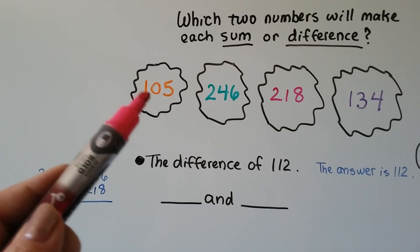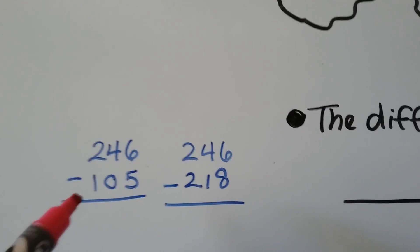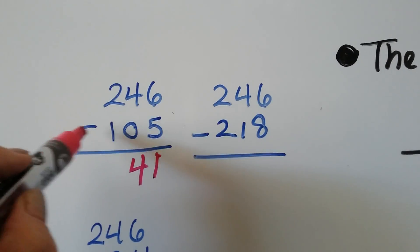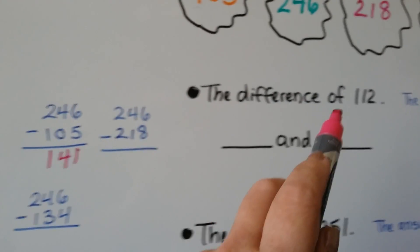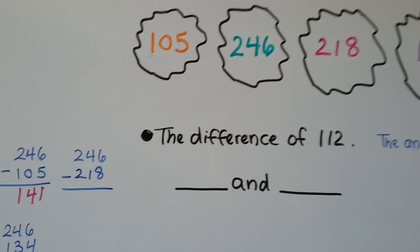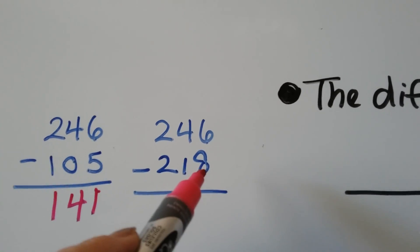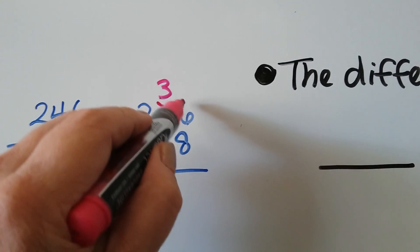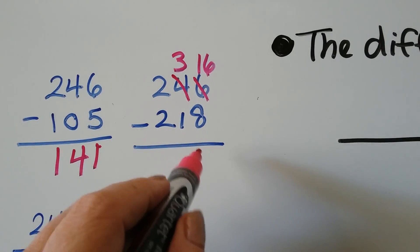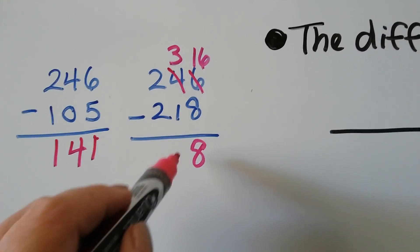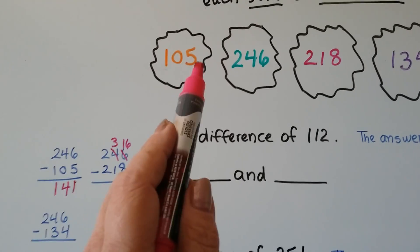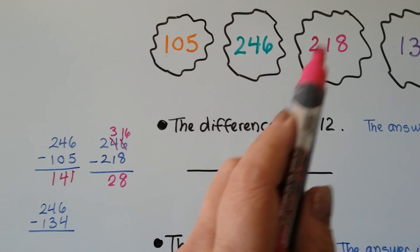So we can try 246 minus 105. 6 minus 5 is a 1, 4 minus 0 is 4, 2 minus 1 is 1 — well, that's 141, that's not 112. So that's not the right combination. Let's try 246 minus 218. We have 6 and we need to take away 8 and we can't, so we regroup — that becomes a 3, that becomes a 16, because we gave a ten to the ones place. 16 minus 8 — well, 8 plus 8 is 16, so that's an 8. 3 minus 1 is a 2. And 2 minus 2 is a 0 — that's only 28. So 246 minus 218 didn't work.